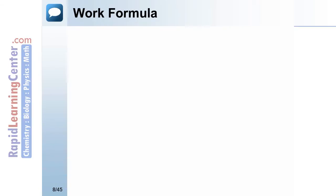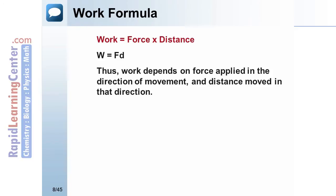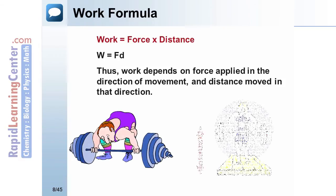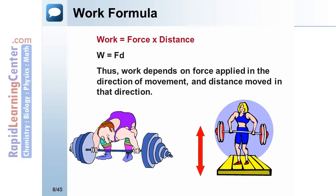Work Formula. Work is the product of force times distance. Thus, W equals F times D. Thus, work depends on the force applied in the direction of movement and the distance moved in that direction. Consider a person lifting a heavy weight from the floor. They exert a force and move it some distance. They do work.